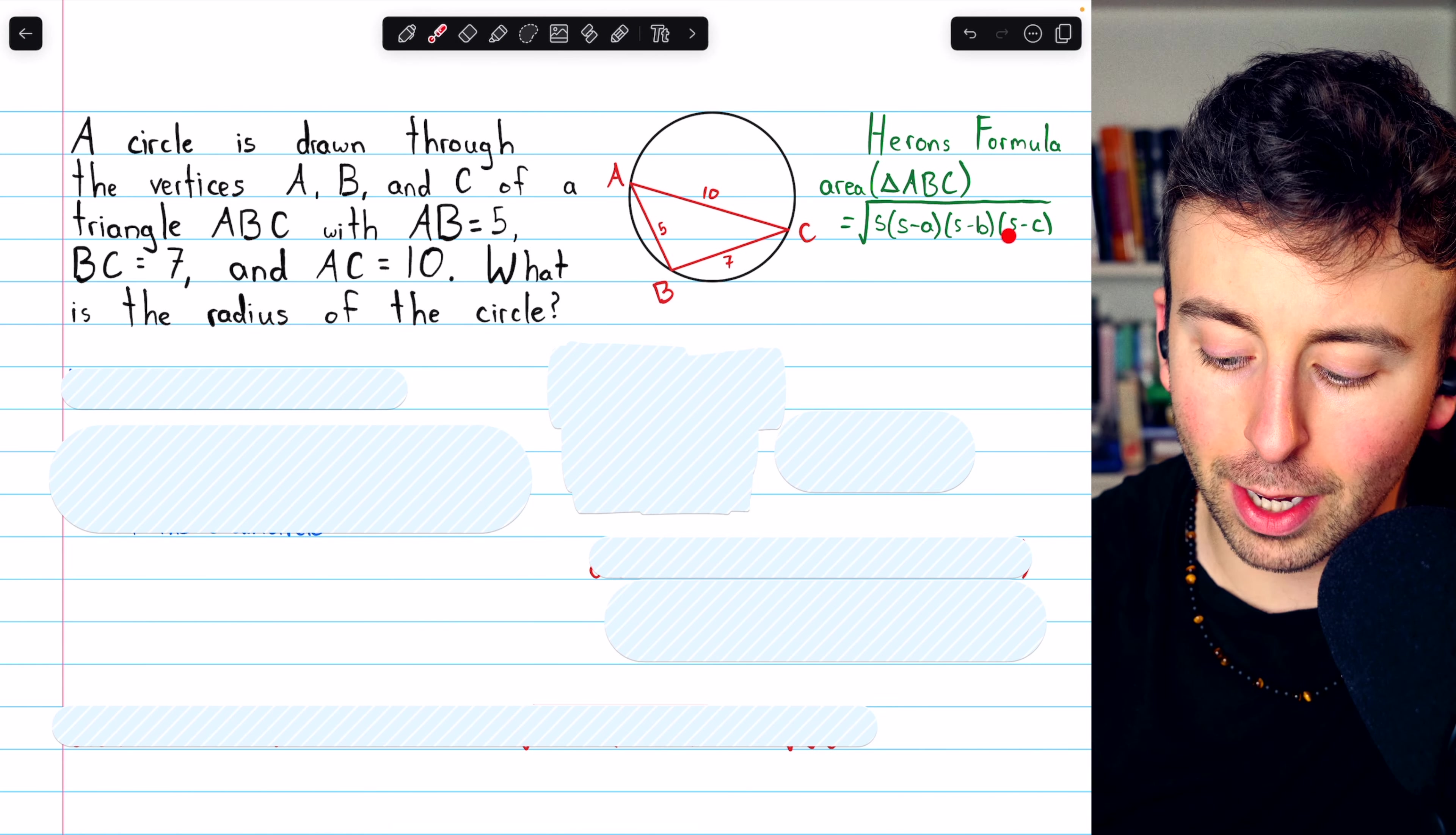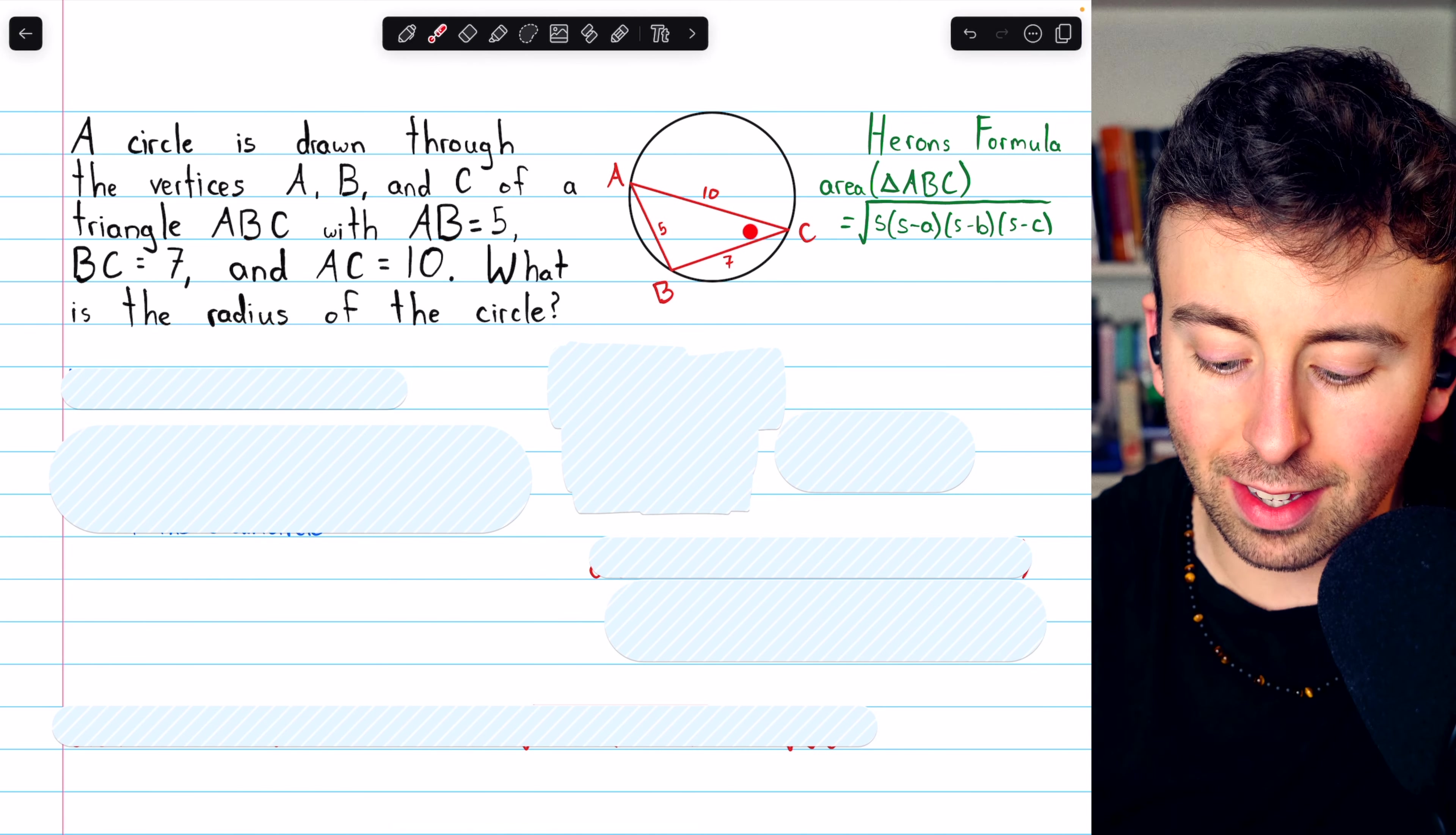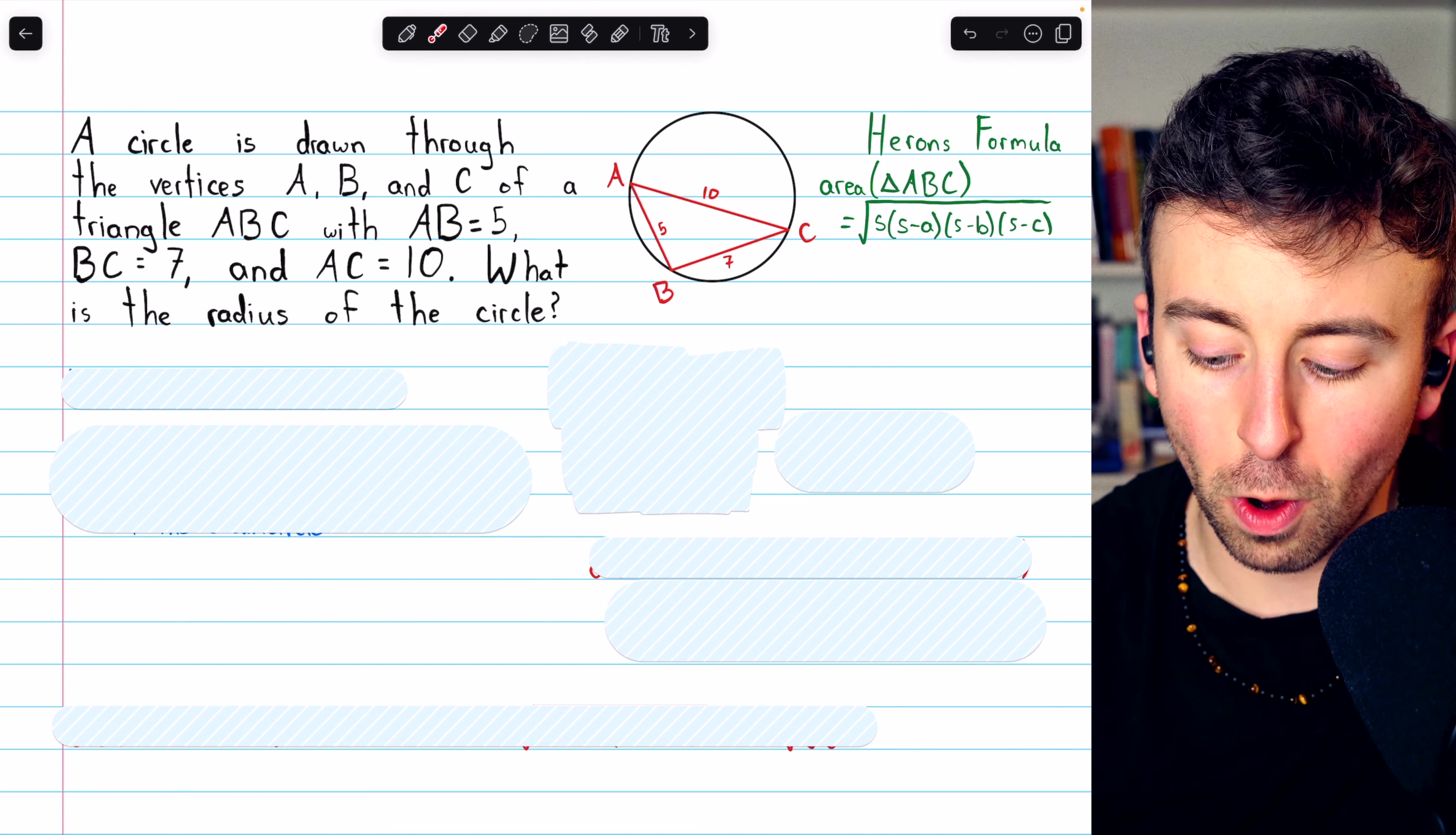multiplied by S minus A, S minus B, and S minus C, where A, B, and C are just the sides of the triangle.